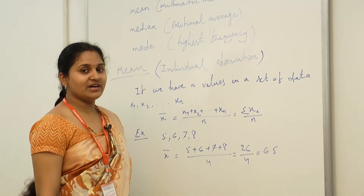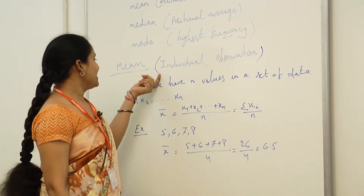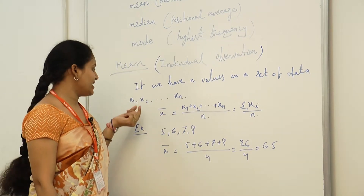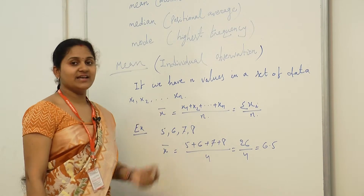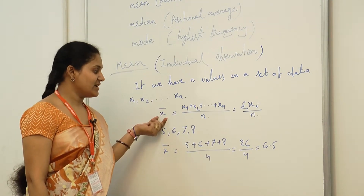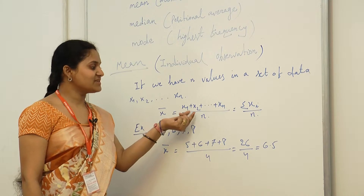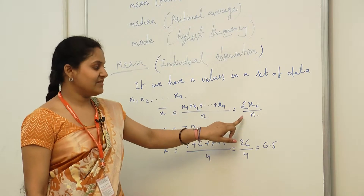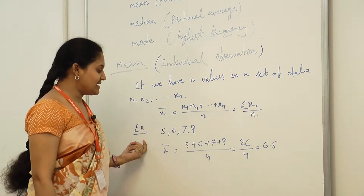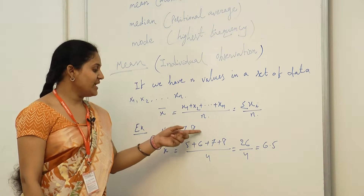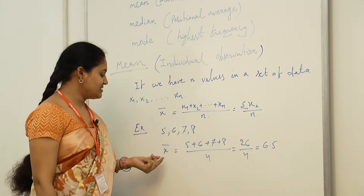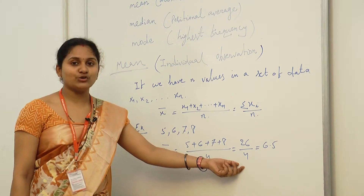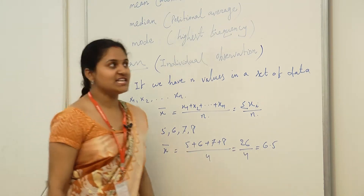First let's learn about mean. For individual observations, if we have n values in a data set called x₁ to xₙ, then the mean x̄ = (x₁ + x₂ + … + xₙ) / n, which equals Σxᵢ / n. For example, for the data 5, 6, 7, 8: x̄ = (5 + 6 + 7 + 8) / 4 = 26 / 4 = 6.5.